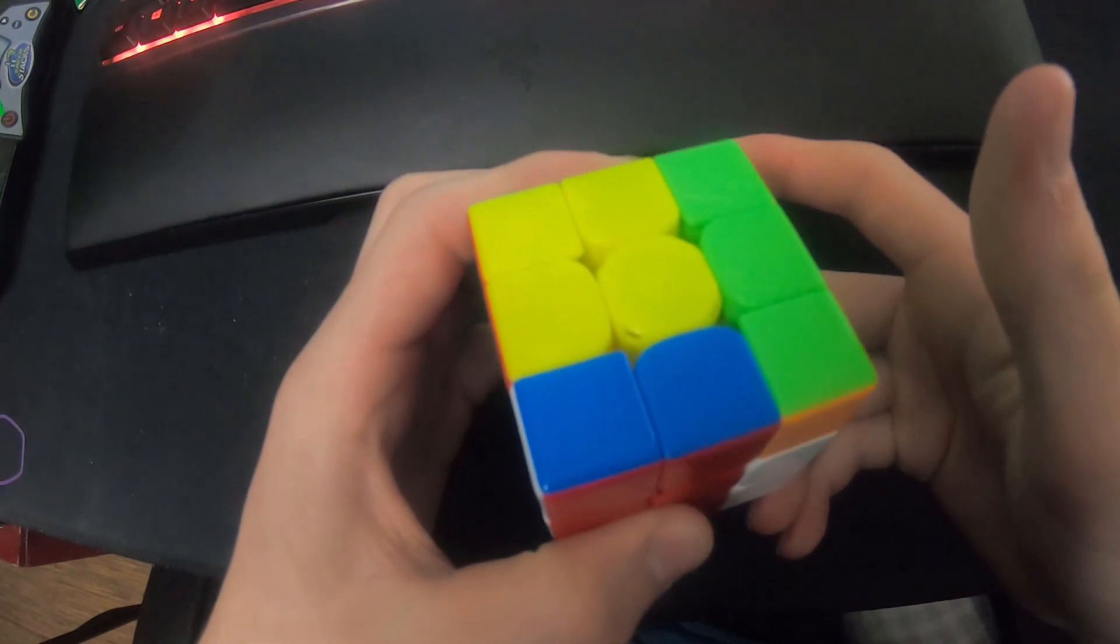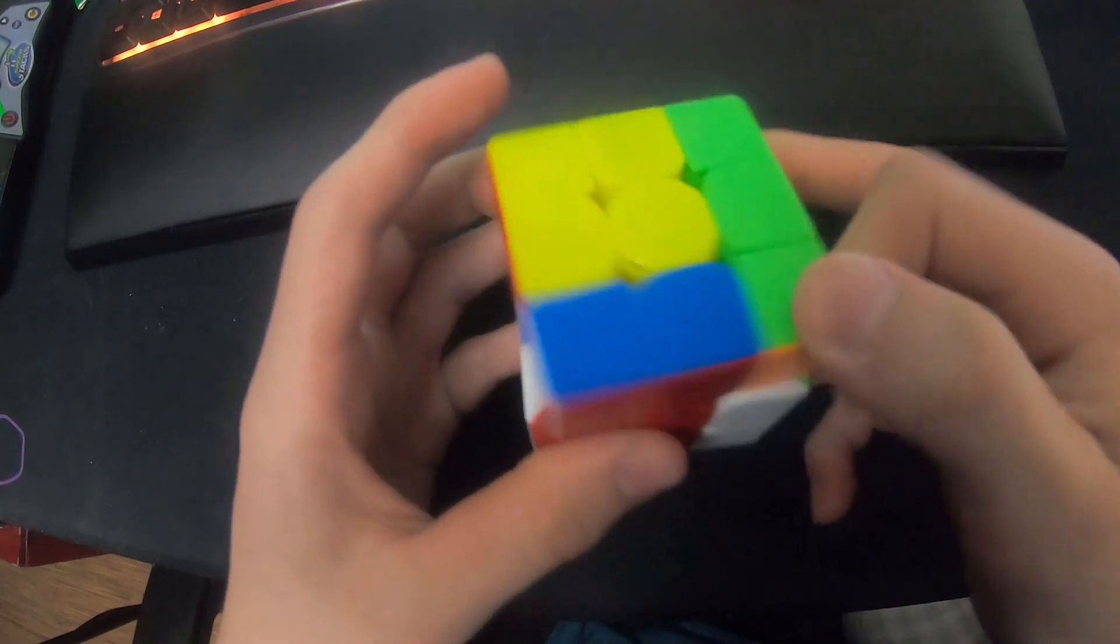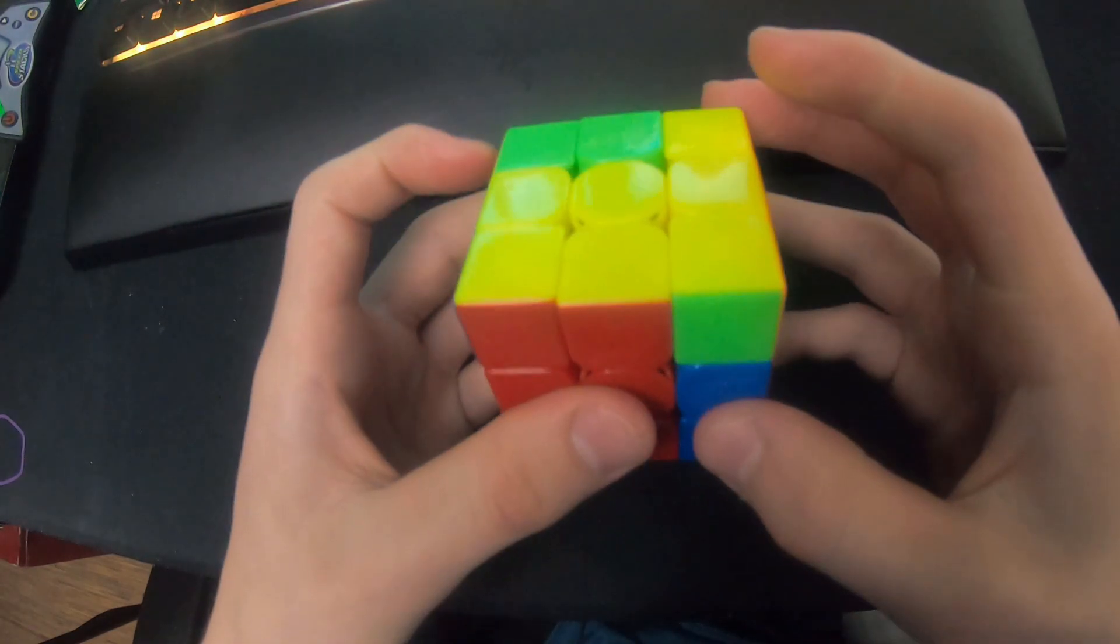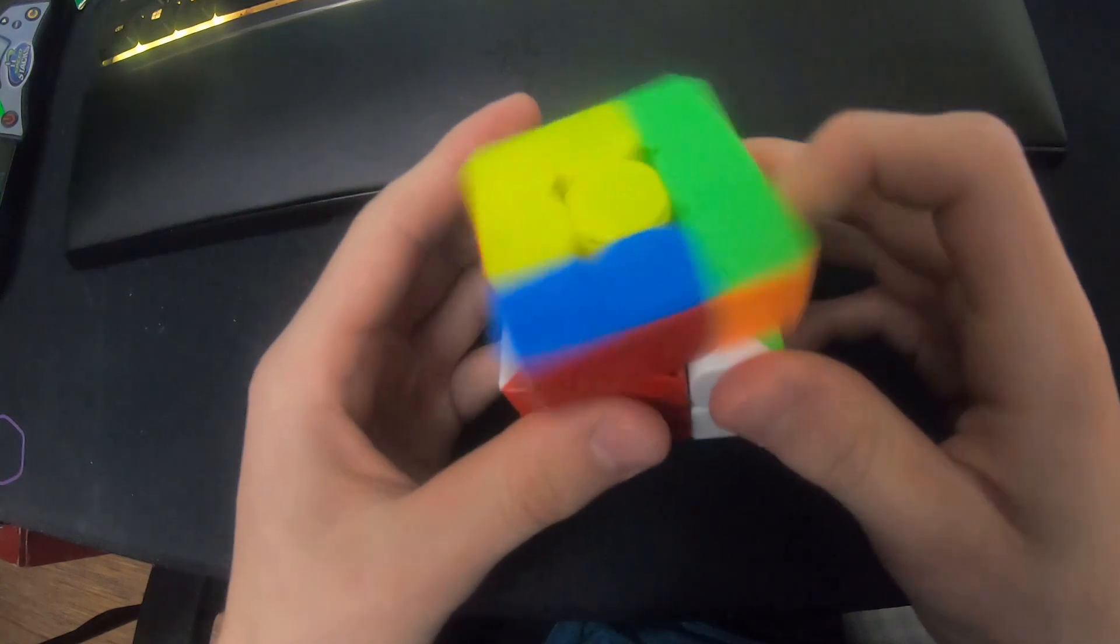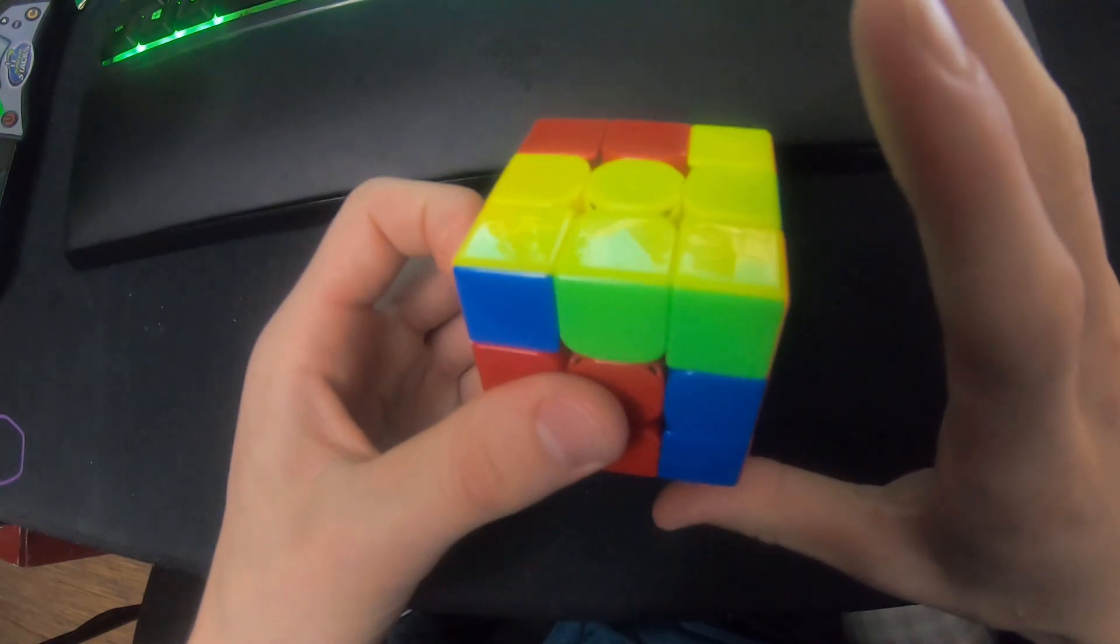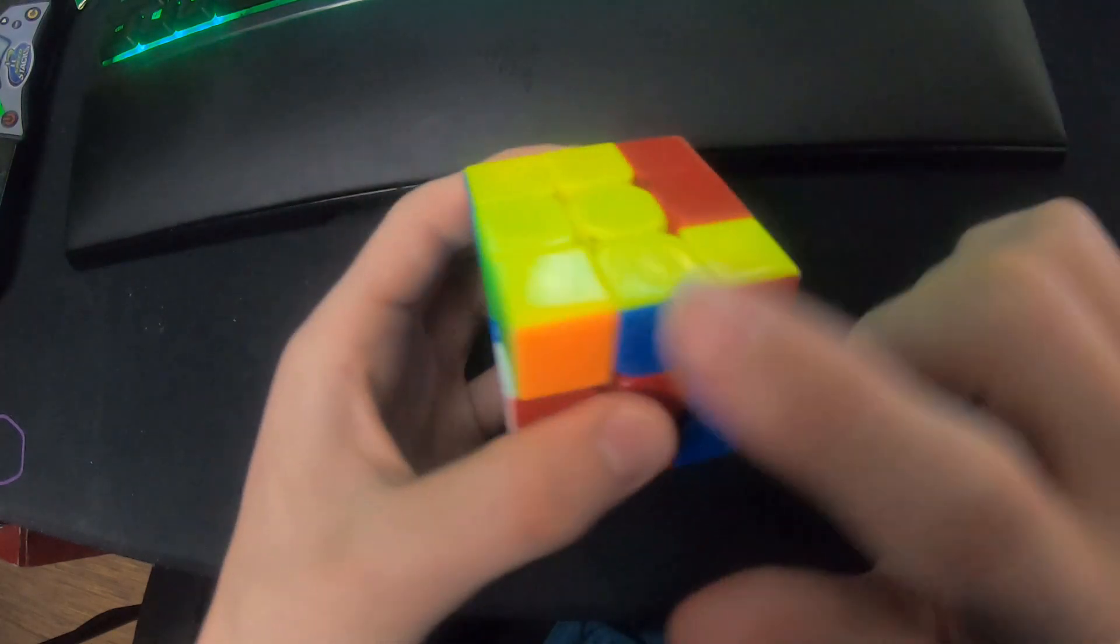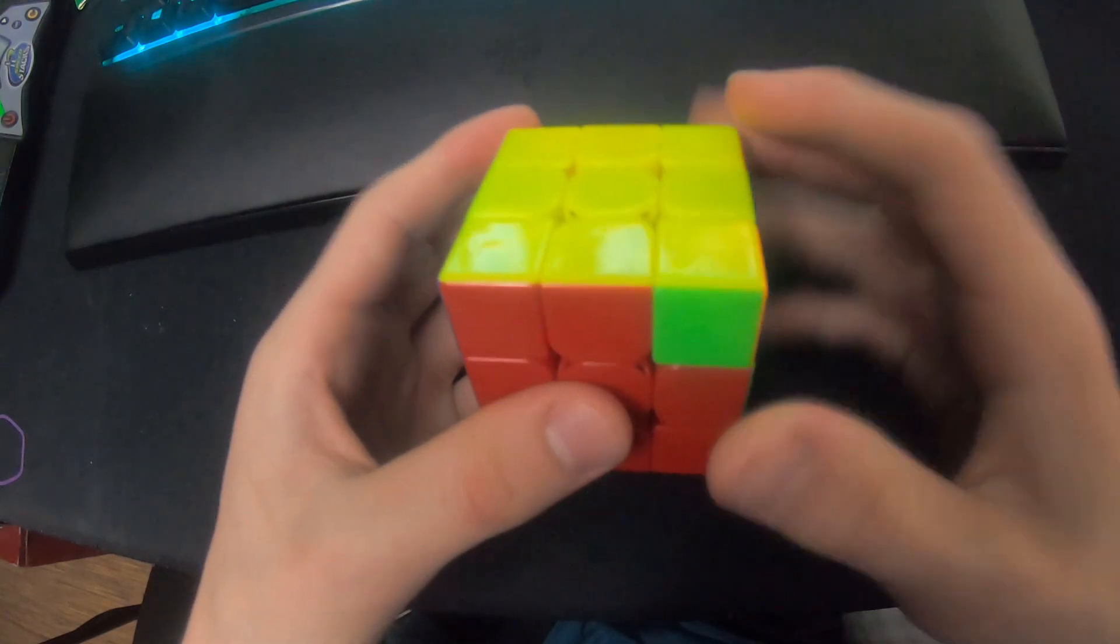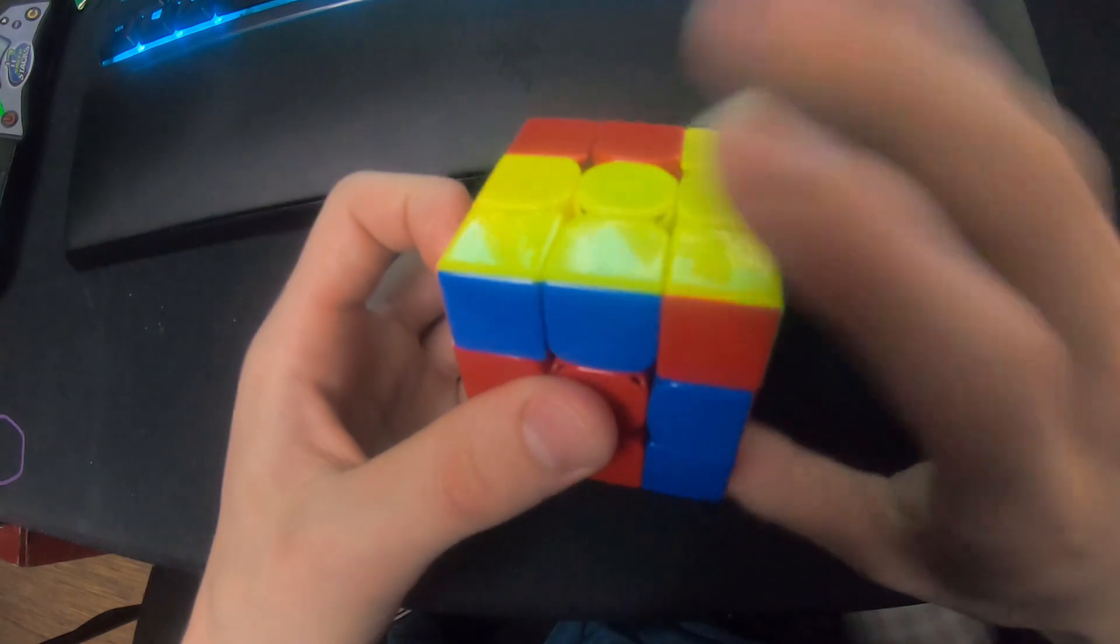Or maybe that, and then F prime. Honestly, I just like to re-grip because you have time to re-grip when you're doing all this right here. The time when you do the U prime right there, you can sort of re-grip your hand.